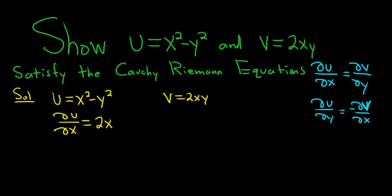And we have to check this against del v del y, right? So if we take del v del y, we treat all of the x's as constants. So the derivative of y is 1, so we just get 2x. So this implies that del u del x is equal to del v del y. So the first condition is satisfied.